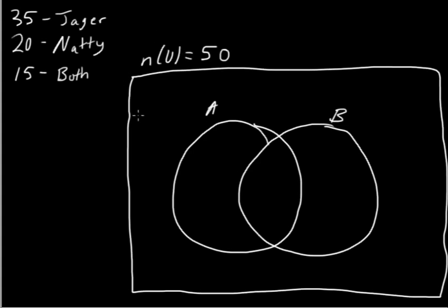So here we have our universal set, which is a rectangle, then we have the number of elements in that set, and the universal set, which is 50, which is the number of students at the party, or 50 students at the party.